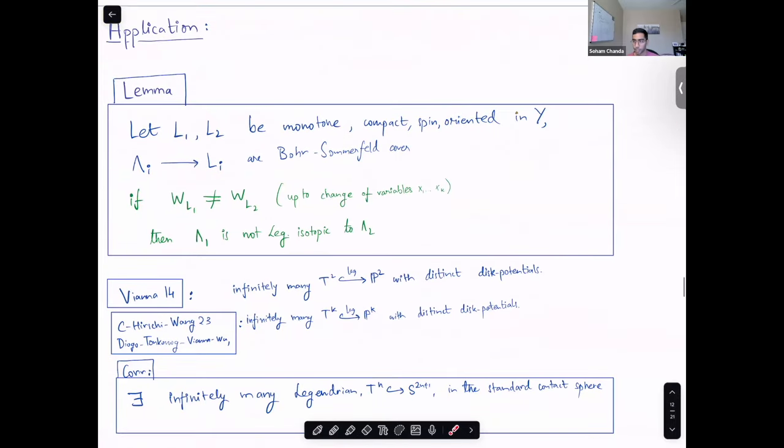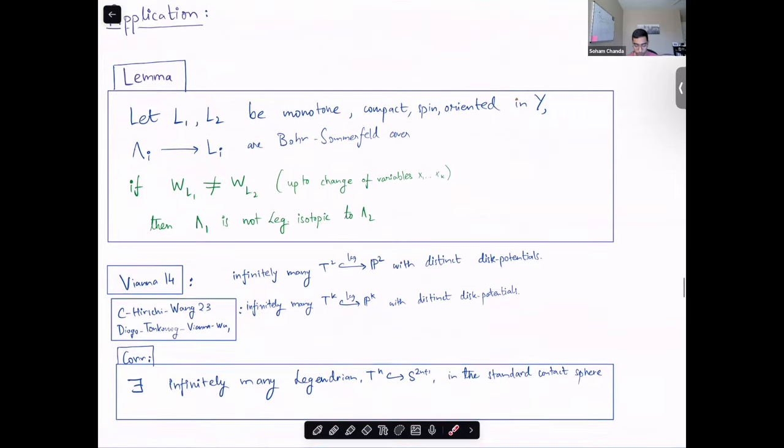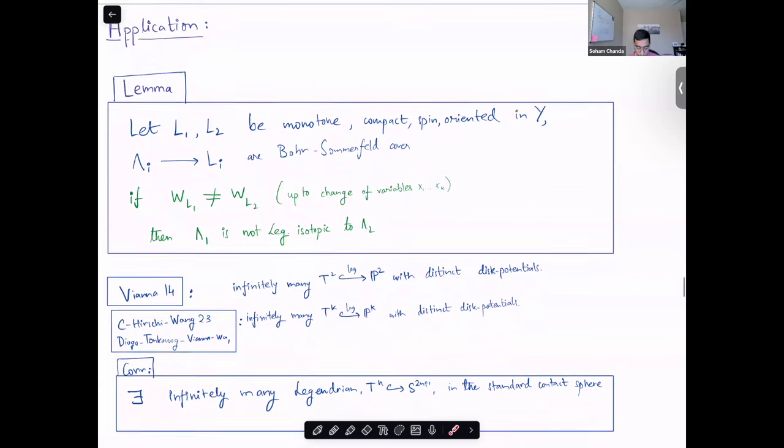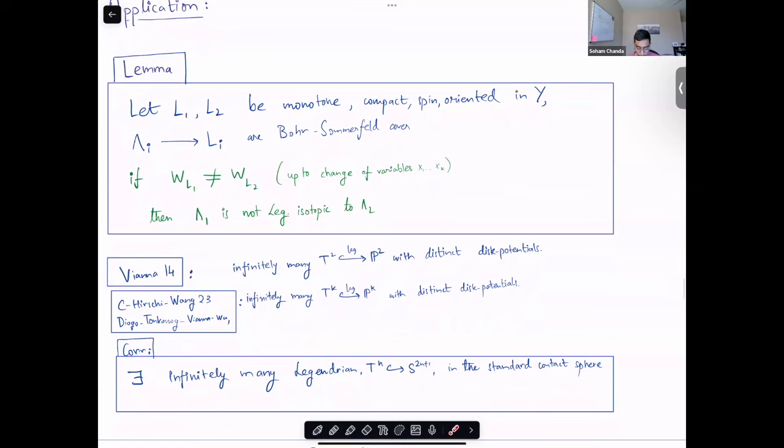I want to focus on one type of application of this theorem in today's talk, and that is to construct new isotopy classes of Legendrians. Since the augmentation ideal and variety are Legendrian isotopy invariant, we have this lemma which says that if you start with two Lagrangians whose disk potentials are not the same, up to a change of variables in the polynomial, then you get that their lifts are not Legendrian isotopic.